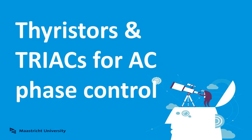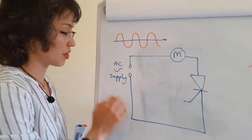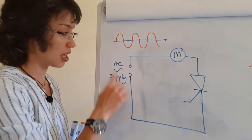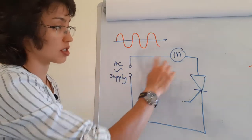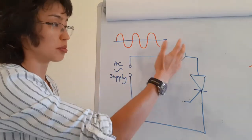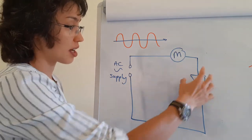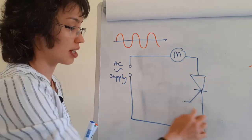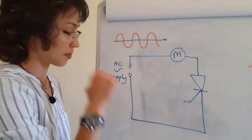Let's talk about how we can use a thyristor in a circuit. In this circuit we've got an AC power supply, so this is given here. I've just drawn a motor, but this could be any load, any sort of device. And I've got my thyristor here, and this is my gate connection.